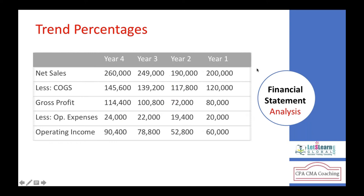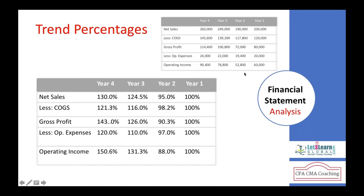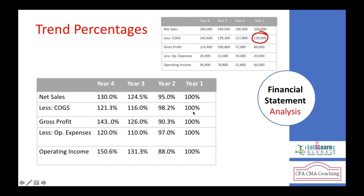Let's see an example in a trend analysis. Based on this information for four years on the income statement — $200,000; $190,000; $249,000; $260,000 — let's see what is the trend in our sales. First year: 200,000 over 200,000 times 100 = 100%. Second year: 190,000 over 200,000 times 100 = 95%. Third year: 249,000 over 200,000 times 100 = 124.5%. Fourth year: 260,000 over 200,000 times 100 = 130%.